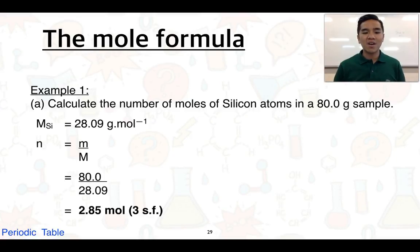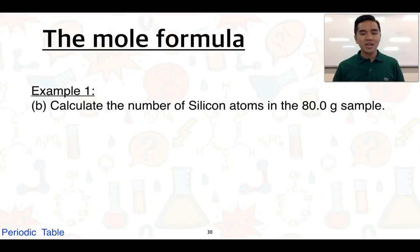You end up getting a number equal to 2.85 moles. Keep in mind I've rounded this to three significant figures because my mass was given to three significant figures, while my molar mass is given to four. Your answer can only have as many significant figures as the mass. From here, the second part asks us to calculate the number of silicon atoms in the 80.0 gram sample. We need to use the information from part A—the number of moles.